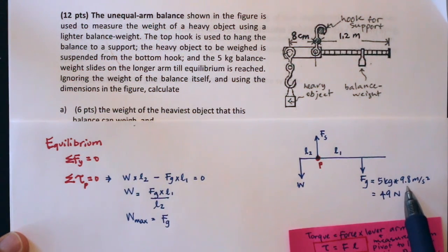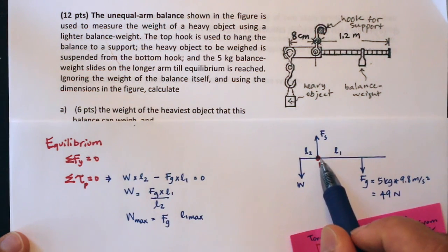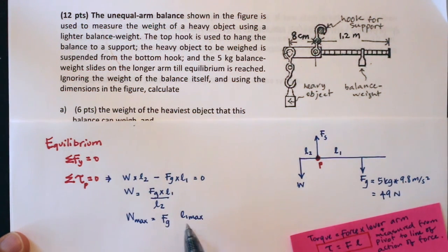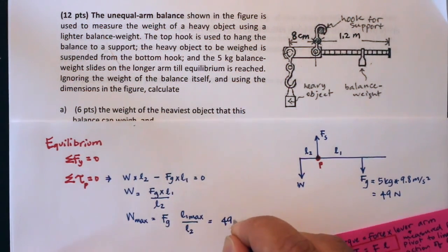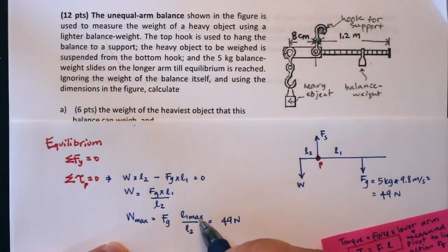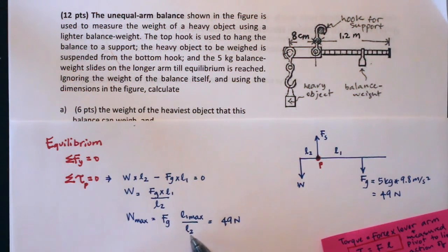Right, 5 times 10 roughly is 50, but 5 times 0.2 is 1, so 49 newtons. And so that's constant, and then l1 can vary from 0 all the way to 1.2 meters, so I'm going to call that 1.2 meters l1 max. So that would give me the maximum weight because l2 is fixed at 8 centimeters. So then that's equal to 49 newtons multiplied by l1 max over l2.